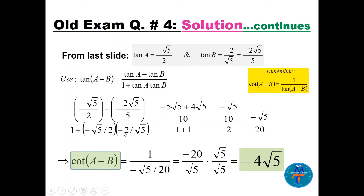For the numerator, using LCD of 10: −√5/2 + 2√5/5 = −5√5/10 + 4√5/10 = −√5/10. So tan(a − b) = (−√5/10)/2 = −√5/20. Taking the reciprocal for cotangent: cot(a − b) = −20/√5. Rationalizing by multiplying by √5/√5 gives −20√5/5 = −4√5.